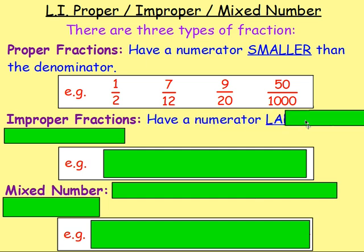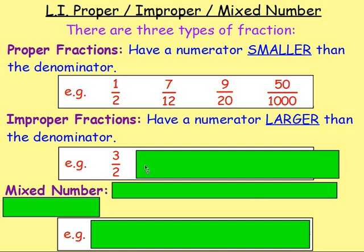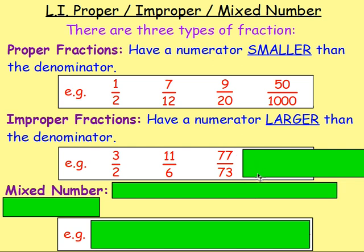What is meant by an improper fraction? Instead of the numerator being smaller than the denominator, the numerator is larger than the denominator. For example: three over two — the top is bigger than the bottom. Eleven over six, seventy-seven over seventy-three, and four thousand five hundred and thirty-three over eighty-two are all improper fractions where the top is definitely larger than the bottom.